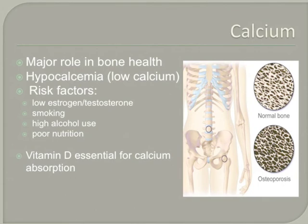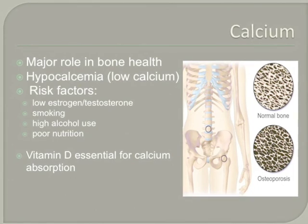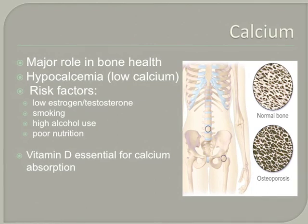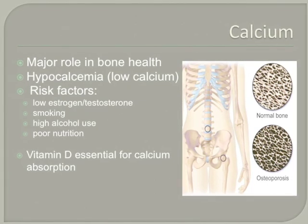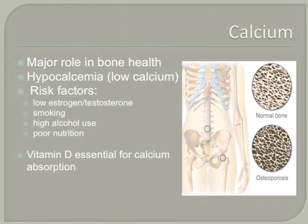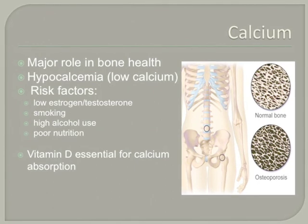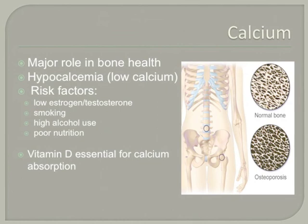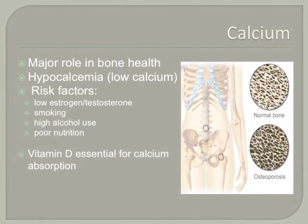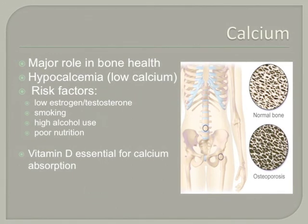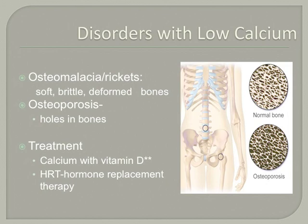Calcium is a major player in our bone health. Hypocalcemia, or low calcium, risk factors include estrogen or testosterone deficiencies. Smoking decreases estrogen levels in men and women and increases the risk of hypocalcemia. Other factors are high alcohol use and poor nutrition. Vitamin D is essential for calcium absorption — it escorts calcium into the intestine so it can be absorbed and used by our bodies. When calcium levels are low, it's not stored in the bones and can lead to soft, brittle, deformed bones. This is called osteomalacia in adults and rickets in children.